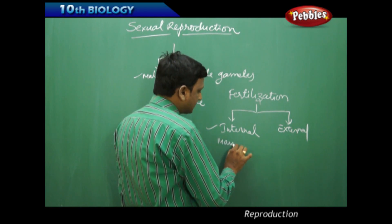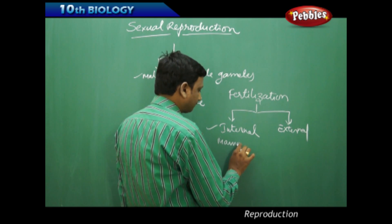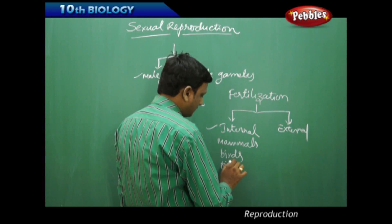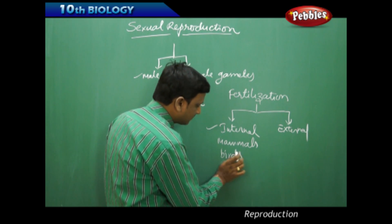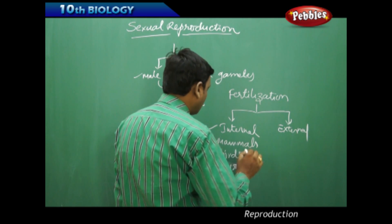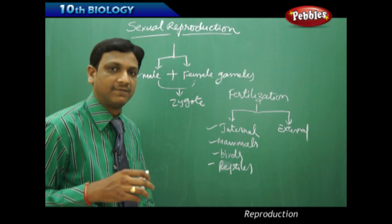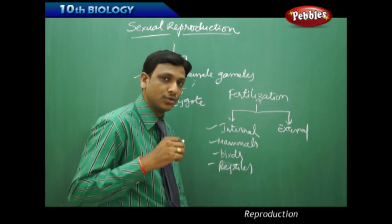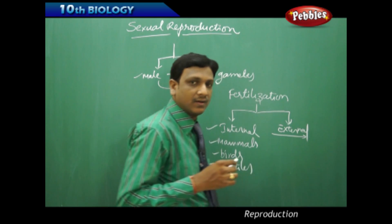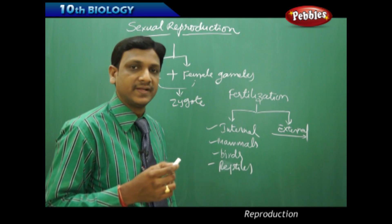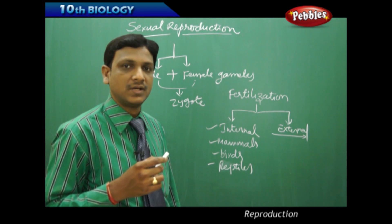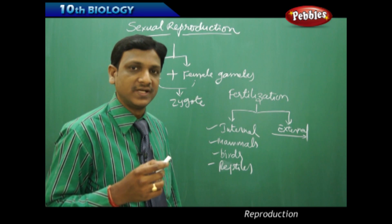Internal fertilization is seen in mammals including humans, birds, and reptiles. External fertilization is fertilization which takes place outside their bodies, in the environment. Aquatic organisms like fishes and frogs show external fertilization — the fertilization takes place outside their bodies.